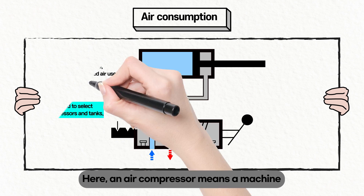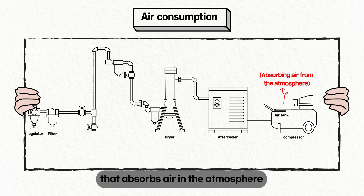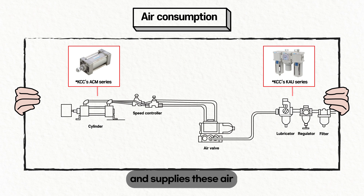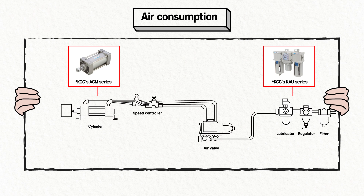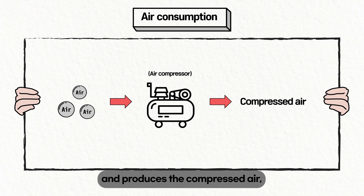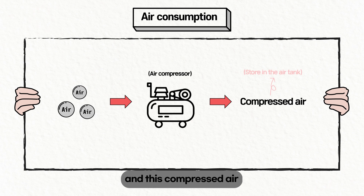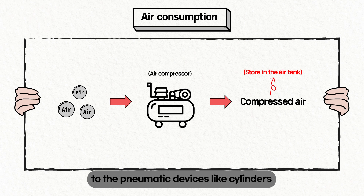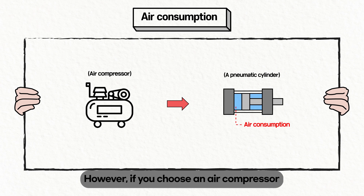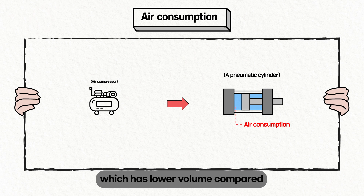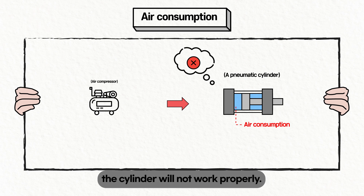An air compressor is a machine that absorbs air from the atmosphere to produce compressed air and supplies it to pneumatic devices such as cylinders. The compressed air is kept in the air tank so it can be supplied to pneumatic devices when needed. However, if you choose an air compressor and air tank with lower volume compared to the amount of compressed air the cylinder uses, the cylinder will not work properly.